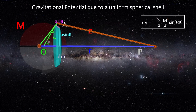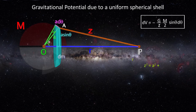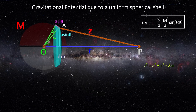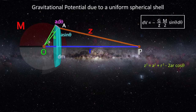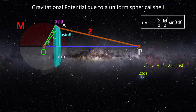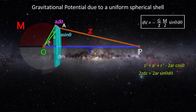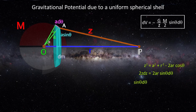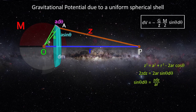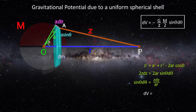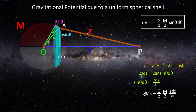From triangle AOP, z squared equals a squared plus r squared minus 2ar cos theta. Upon differentiating both sides, 2z dz equals 2ar sin theta d theta, so sin theta d theta equals z dz by ar. Hence, dV equals minus Gm by 2ar times dz.